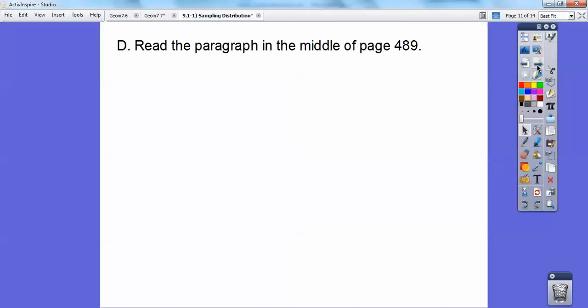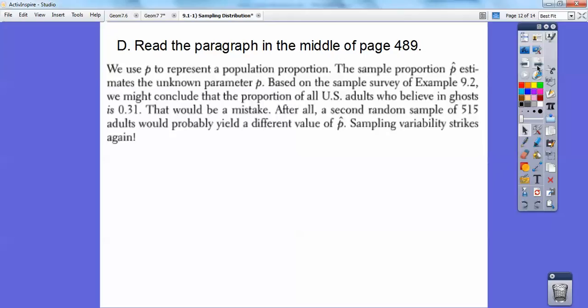So we're going to read the paragraph in the middle of the page. So here we go. We use p—remember, p doesn't have a hat right here—so we use p to represent the population proportion. The sample proportion, p hat, estimates the unknown parameter p. Based on the sample survey in 9.2, we might conclude that the proportion of all U.S. adults who believe in ghosts is 31%, but that would be a mistake. After all, a second random sample of 515 adults would probably yield a different value of p hat. So sampling variability strikes again.